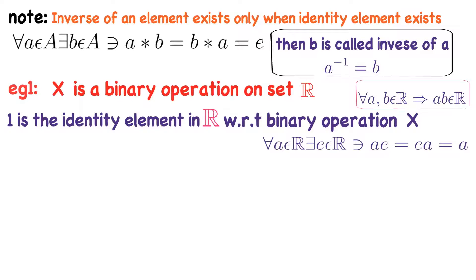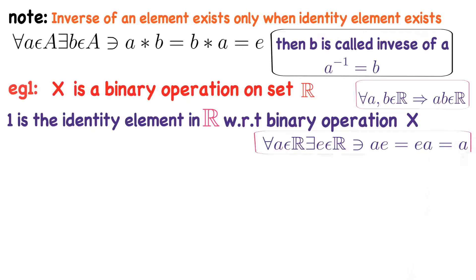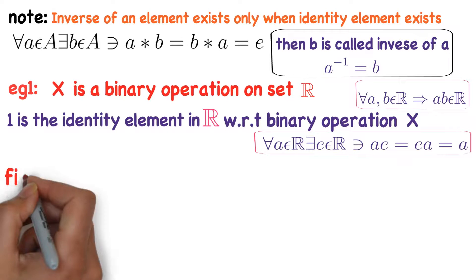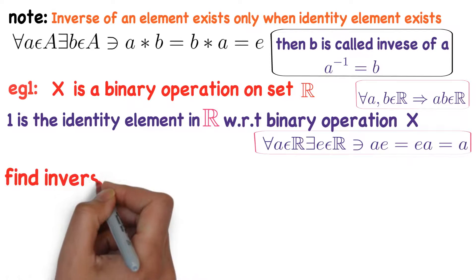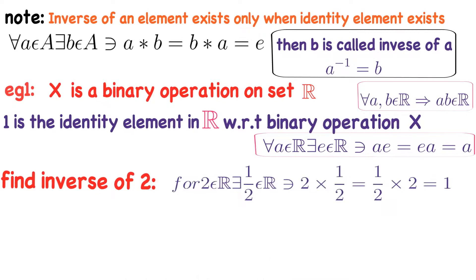Now we find the inverse of element 2. There exists 1/2, which is a real number, such that 2 into 1/2 equals 1/2 into 2 equals 1, the identity element. So 2 inverse equals 1/2. Similarly, 3 inverse equals 1/3, since 1/3 is a real number and 3 into 1/3 equals 1/3 into 3 equals 1.